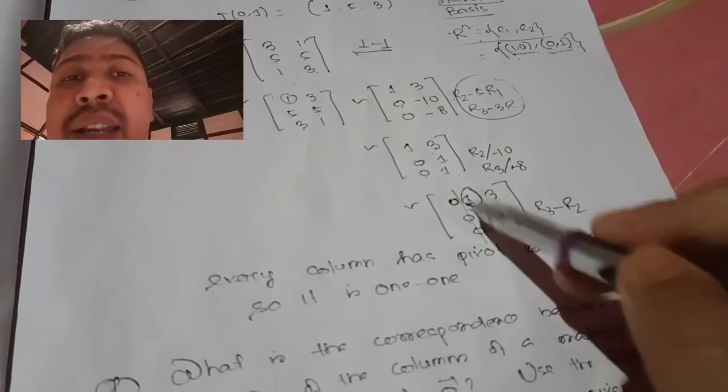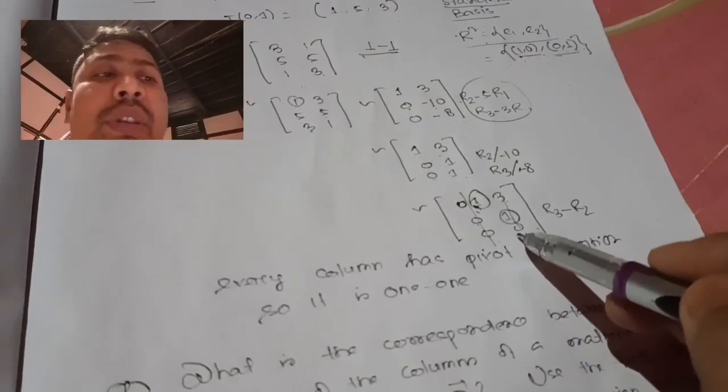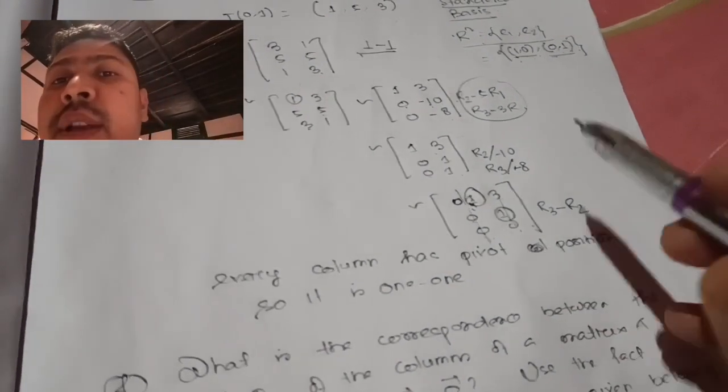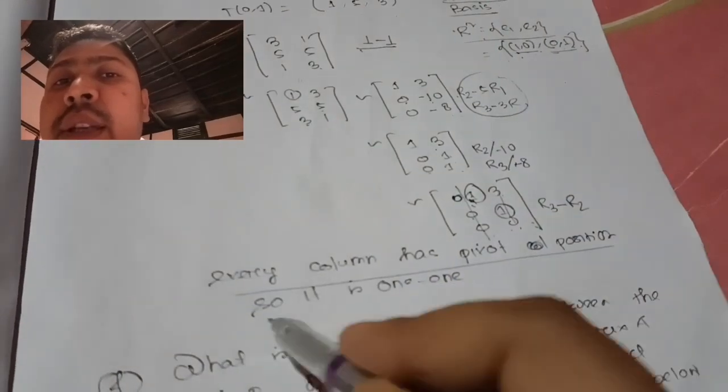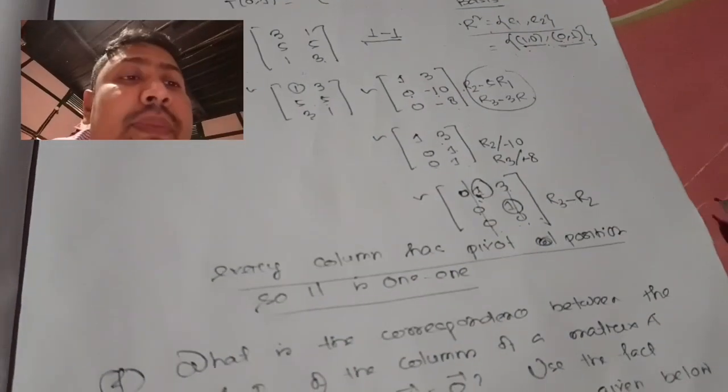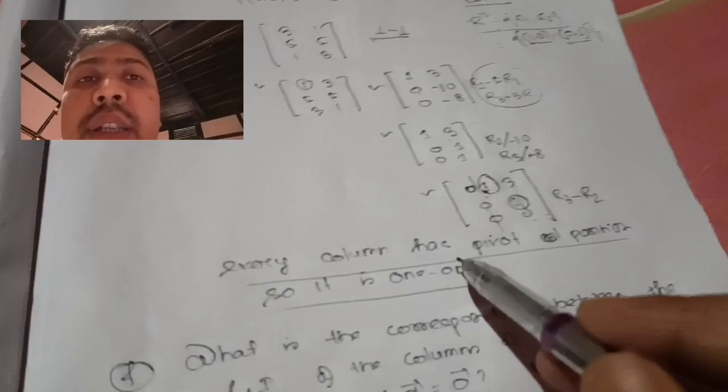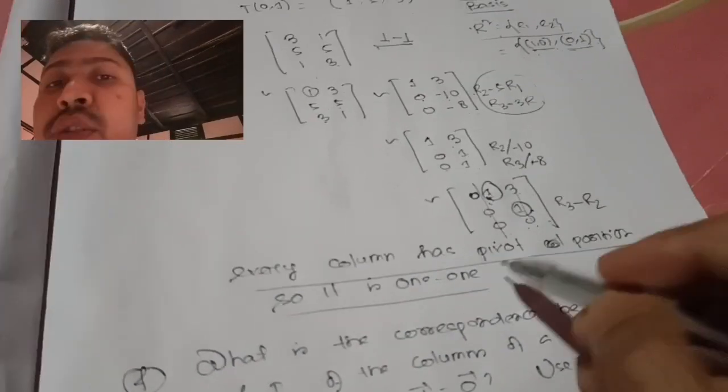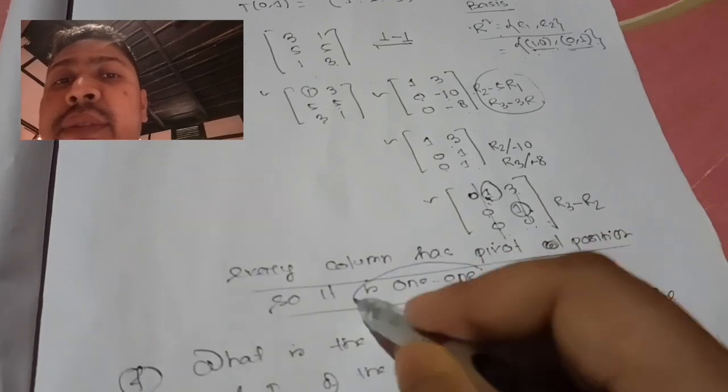Every column has a non-zero leading entry of 1 as a pivot position. Therefore, this transformation is one-one.